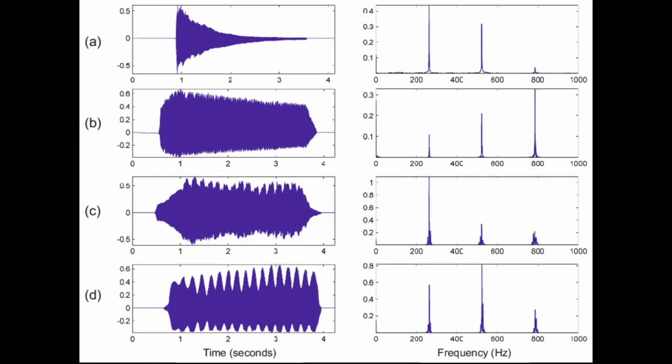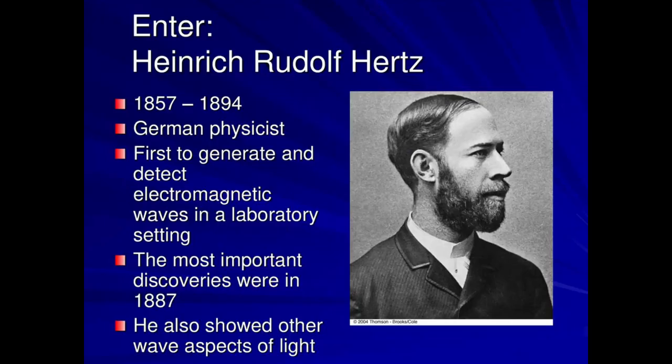Music is really just a vibration of air. And we measure this vibration by counting full wave cycles per second. Since the German physicist Heinrich Rudolf Hertz, the unit is Hertz. So 440 vibrations per second equals 440 Hertz.